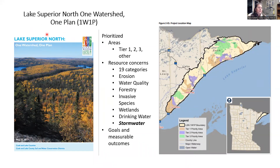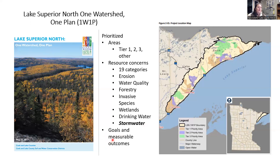This is what the One Watershed One Plan document looks like — it's on Lake County Soil Water Conservation District's website. It covers the Knife River up to Grand Portage. There are prioritized areas based on input, areas of protection, and impaired waters. For instance, the Knife River is impaired for turbidity — too much sediment — and the Beaver River as well. We prioritize based on tiers, with Tier 1 being higher priority. There are 19 resource concerns; stormwater is one of them, which is why we're covering it today. Within that plan, there are goals and measurable outcomes for each resource concern.